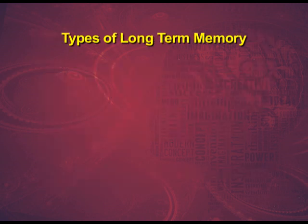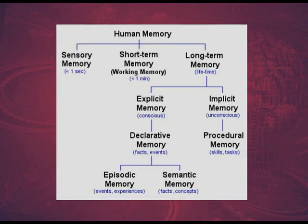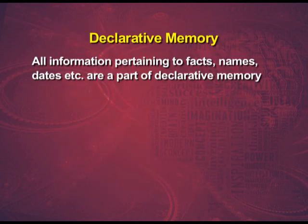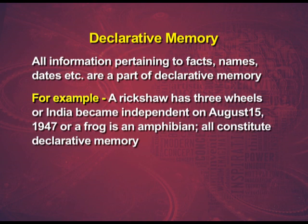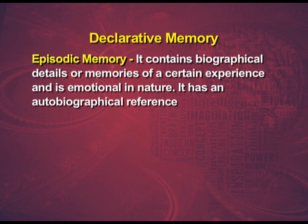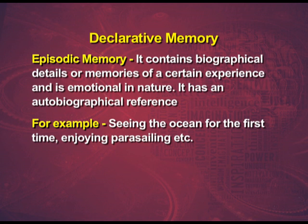Long-term memory can be declarative or procedural. Declarative memory can further be divided into episodic memory and semantic memory. All information pertaining to facts, names, dates, etc. are part of declarative memory — for example, a rickshaw has three wheels, or India became independent on August 15, 1947. Episodic memory contains biographical details or memories of a certain experience and is emotional in nature, with an autobiographical reference — for example, seeing the ocean for the first time or enjoying parasailing.